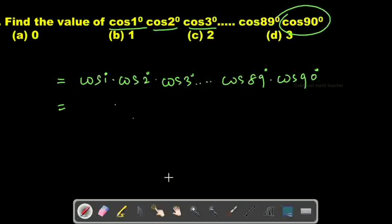In 9th and 10th standard, we learned fixed values for specific angles: 0°, 30°, 45°, 60°, and 90°. We have a trigonometric table with these values that we need to memorize.